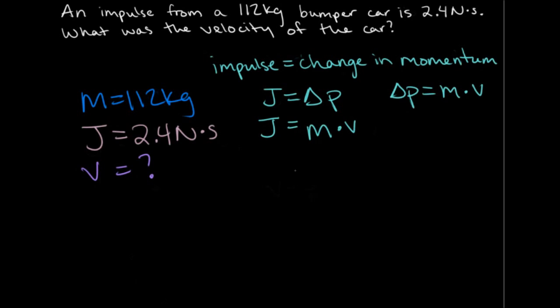So now I need to get velocity by itself. And in order to do that, I'm going to divide both sides by mass, so that mass cancels over there. And I'll end up with velocity equals impulse over mass. And we just plug in our numbers.